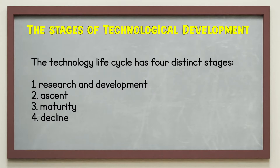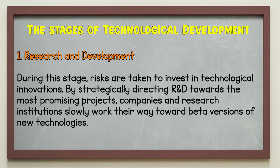The technology life cycle has four distinct stages: research and development, ascent, maturity, and decline. During the research and development stage, risks are taken to invest in technological innovations. By strategically directing R&D towards the most promising projects, companies and research institutions slowly work their way toward beta versions of new technologies.